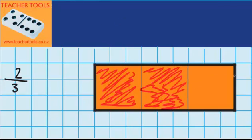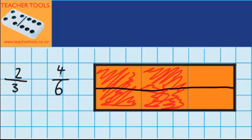Now I'm going to see if I can change this shape into sixths. The easiest way to do that is to draw a line right through the middle. There are now six pieces, so I can write that in as my denominator. And how many pieces are shaded now? One, two, three, four. So we can see that two thirds is the same as four sixths.